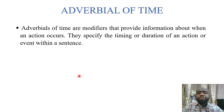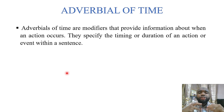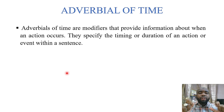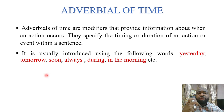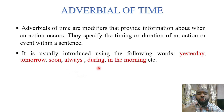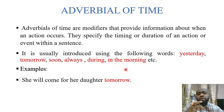Now let's begin with adverbial of time. Adverbials of time are modifiers that provide information about when an action occurs. They specify the timing or duration of an action or event within a sentence. This type is usually introduced by words such as: yesterday, tomorrow, soon, always, during, in the morning, in the evening, in the afternoon, etc.